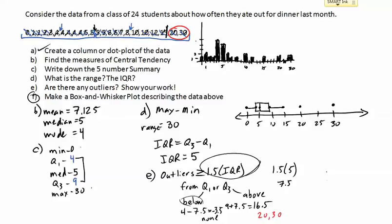We're done. We created both a dot plot and a column plot, found the measures of central tendency, wrote down the five number summary, found the range and IQR, identified the outlier cutoff values, found which values were outliers, and created a box and whisker plot. Remember: outliers are individual points, and the whisker only goes to the last point within 1.5 times the IQR — in our case that was 15, just inside the 16.5 cutoff. See you next time.